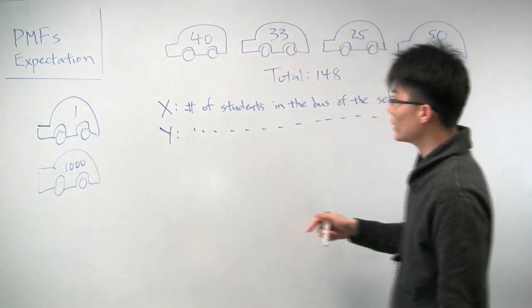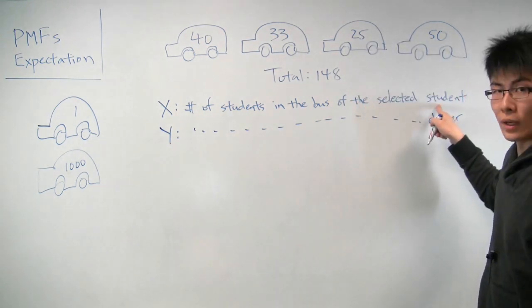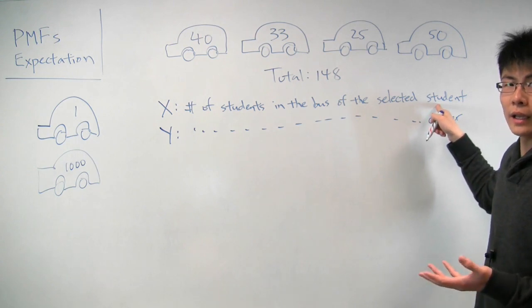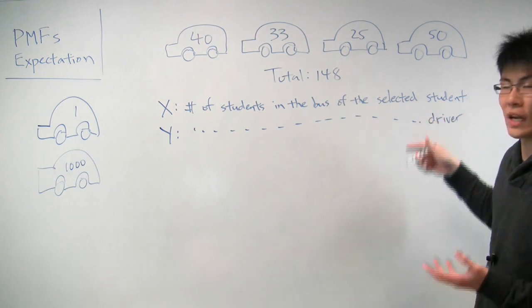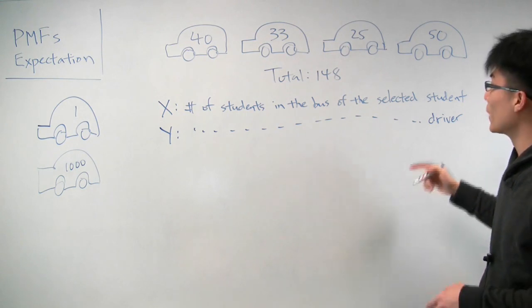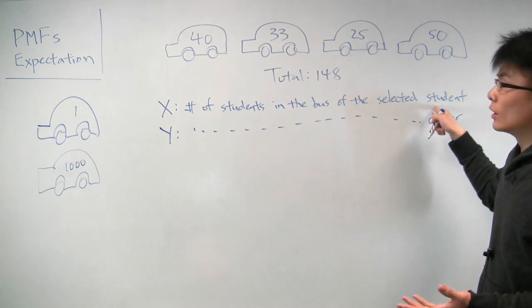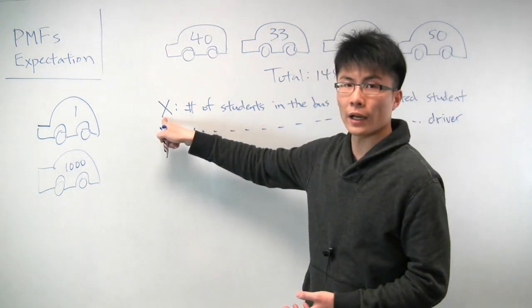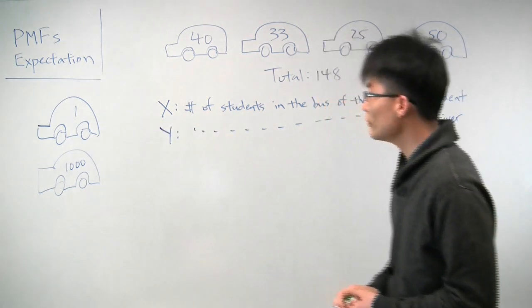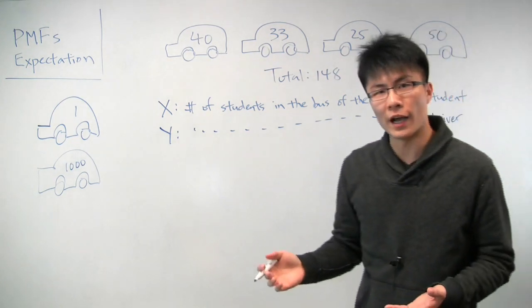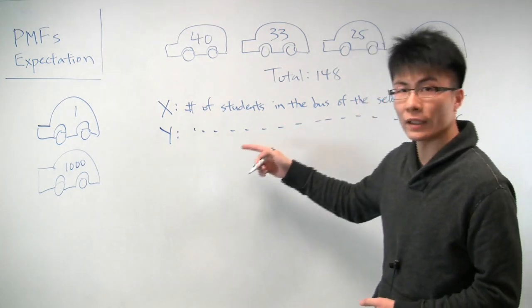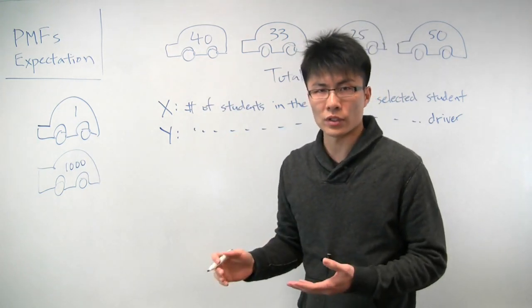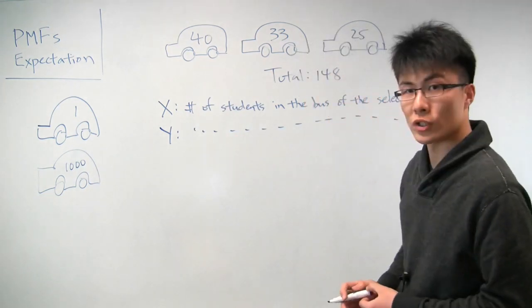And the reason here is that because you select the student at random, you're more likely to select the student who is in a large bus because that bus just has more students to select from. And because of that, you're more biased in favor of selecting large buses. And therefore, that makes x higher in expectation. So that's the intuition behind this problem. And now let's actually go through some of the more mechanics and write out what the PMFs and the calculation for the expectation would be to verify that our intuition is actually correct.